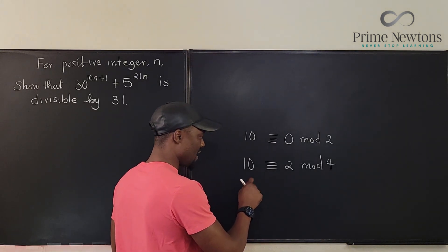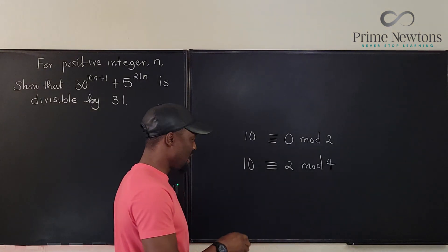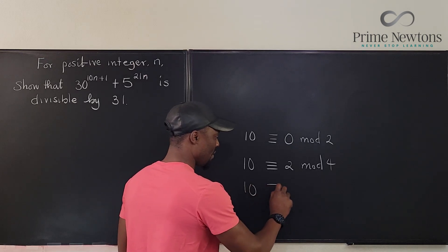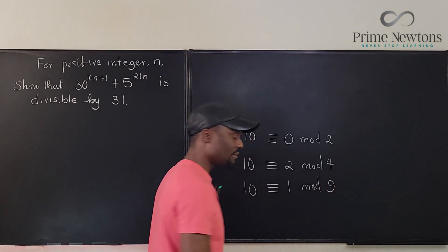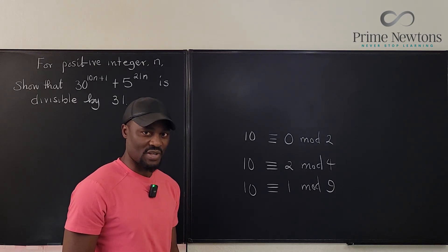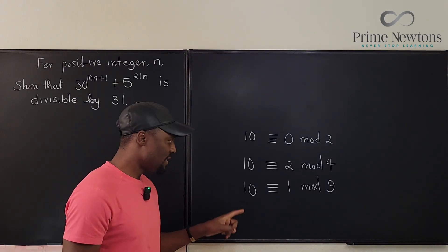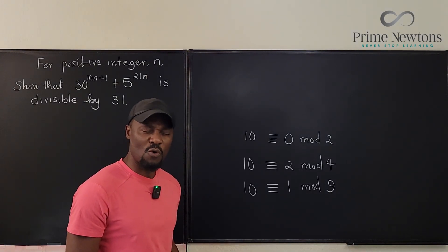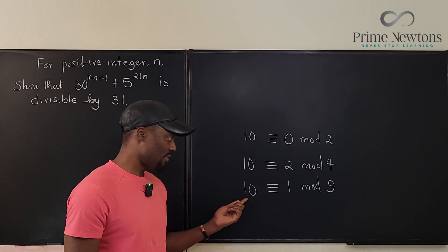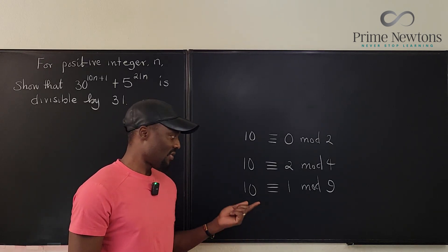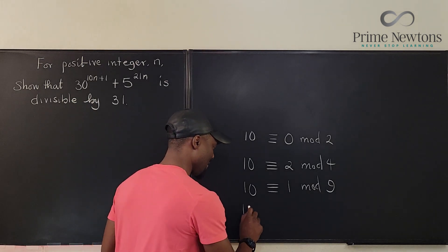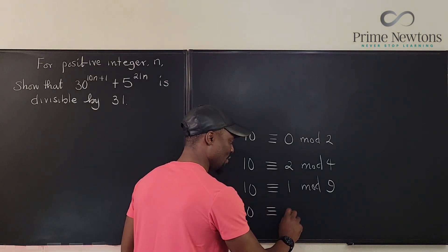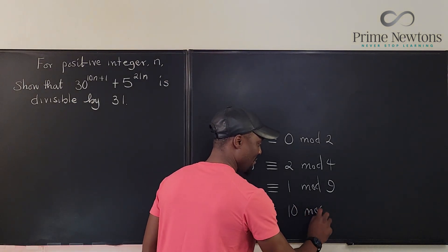the number is going to be, if you divide 10 by nine, what would be the answer? Well, 10 will be congruent to one mod nine. Okay, one more. What if you divide 10 by 11? What would be the remainder? Well, the remainder is going to be 10. Because 10 is smaller than 11. So 10 is congruent to 10 mod 11.